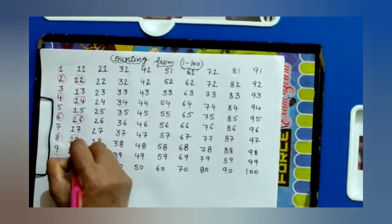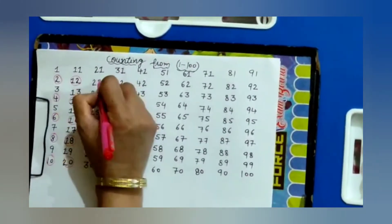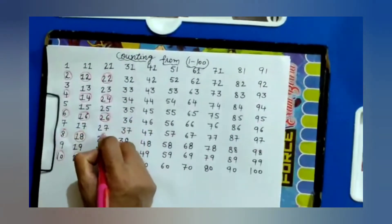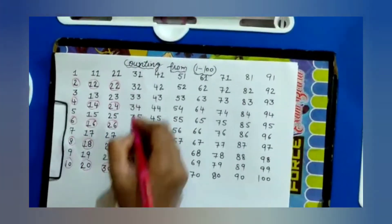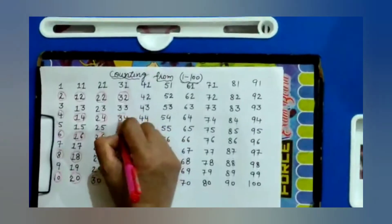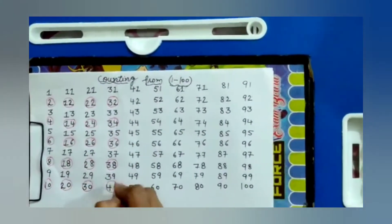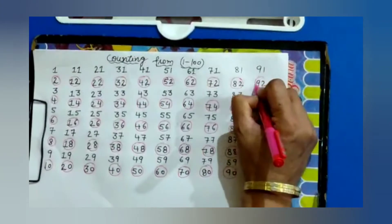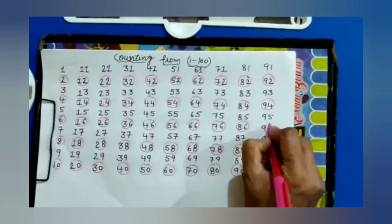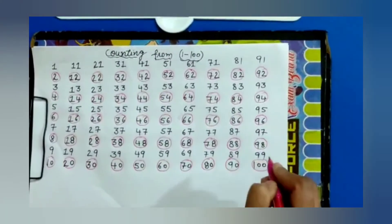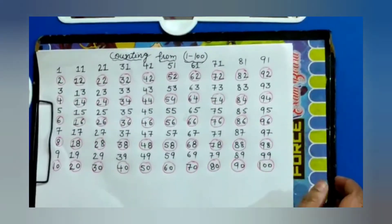We will circle all the numbers from one to one hundred: thirty-four, thirty-six, thirty-eight, forty. Like this, we will circle all the numbers up to one hundred.